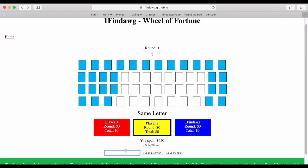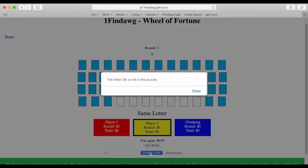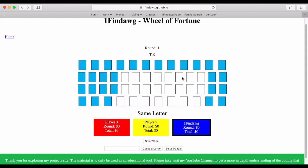So I would just spin the wheel. I have 650. And we're going to go with an R. When you spin and you guess a consonant, that's whatever you spun, that's how many you get per letter that is in the puzzle. So there's one R, I would have gotten 650. If there were two, I would have gotten 1300. In this case, there was no R.